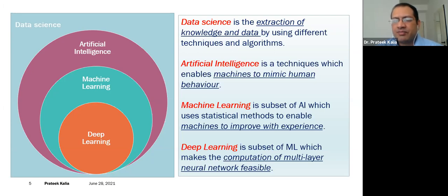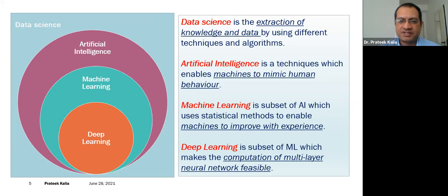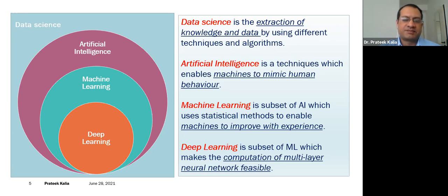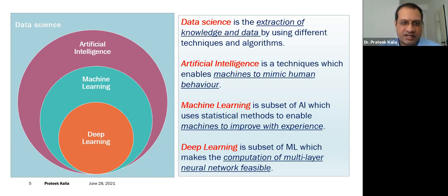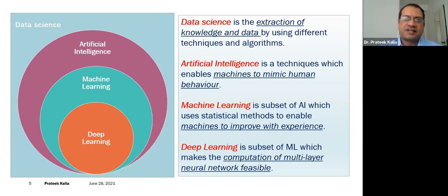Artificial intelligence has a further subset called machine learning. Just like humans learn through practice and experience, machines similarly improve with repetition. There is a further subset of machine learning called deep learning, which is like how we teach a baby. We teach the computer about various things — it is like computation of a multi-layer neural network, and it makes things feasible for us.